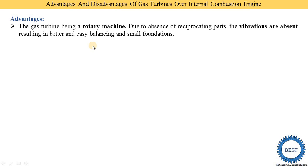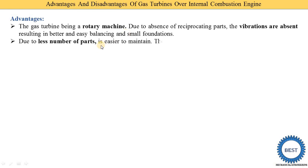Because vibrations are less, balancing of the machine is well achieved, and only small foundations are required for the gas turbine power plant. In an IC engine, more vibrations require bigger foundations and make balancing difficult.